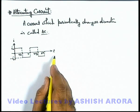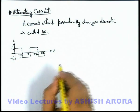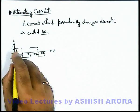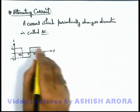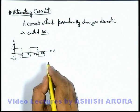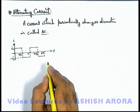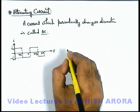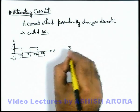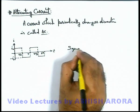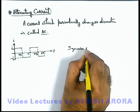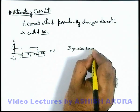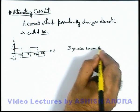This specific type of current waveform, where the waveform becomes like a square or rectangle, is called square wave alternating current.